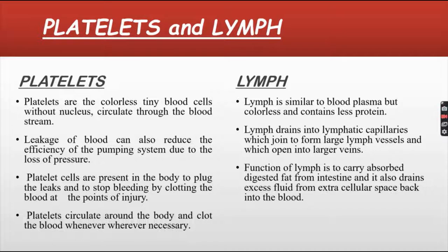Functions of lymph: it supplies nutrition and oxygen to those parts where blood cannot reach. It drains away excess tissue fluids. Lymph returns protein to the blood from the tissue spaces. Fats from the intestine are also absorbed through the lymph. The lymphocytes and monocytes of lymph act as defensive cells of the body. Lymph also removes bacteria from tissues.